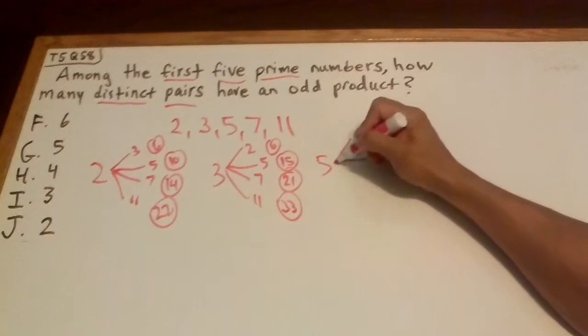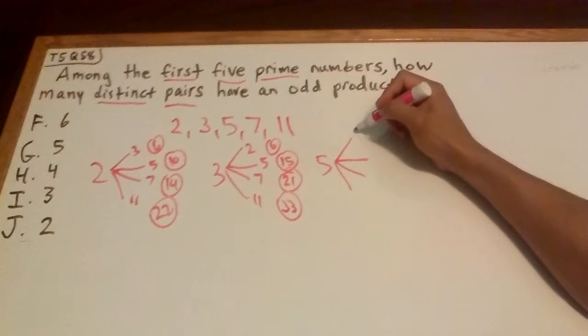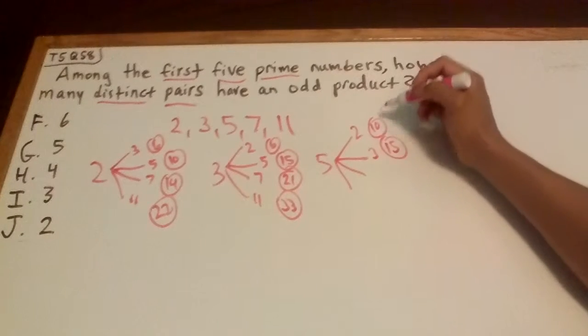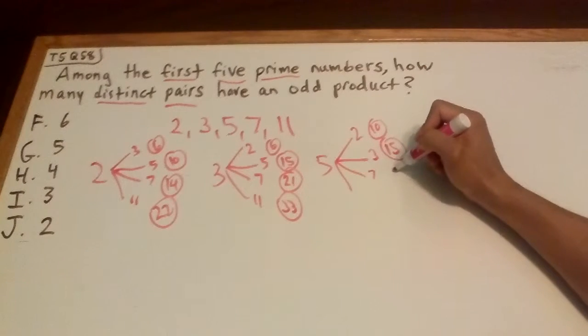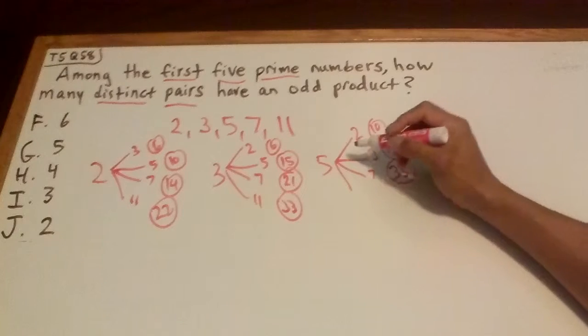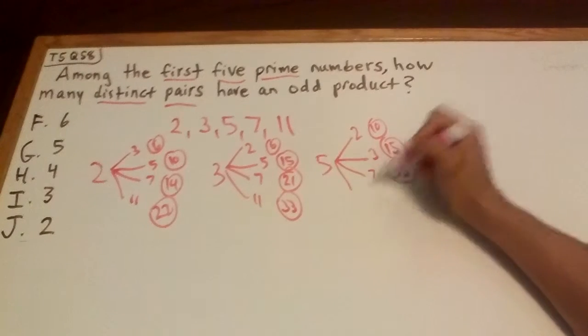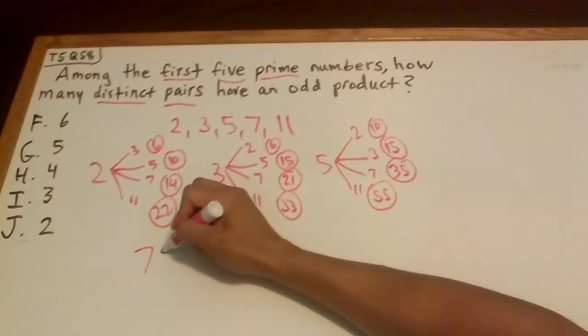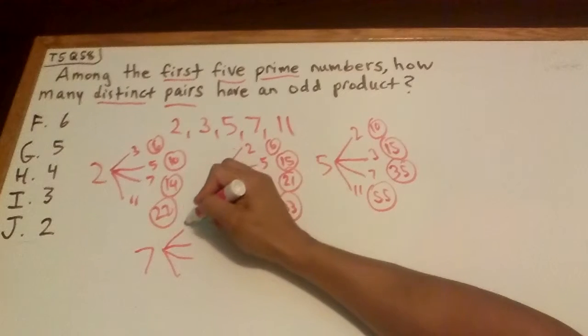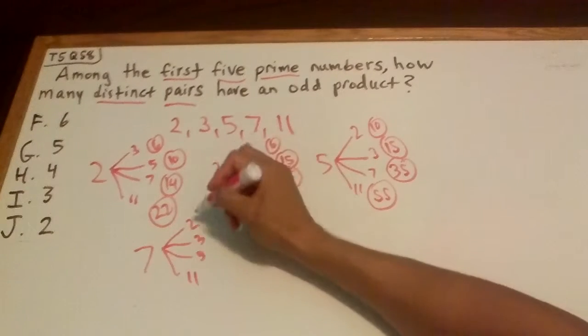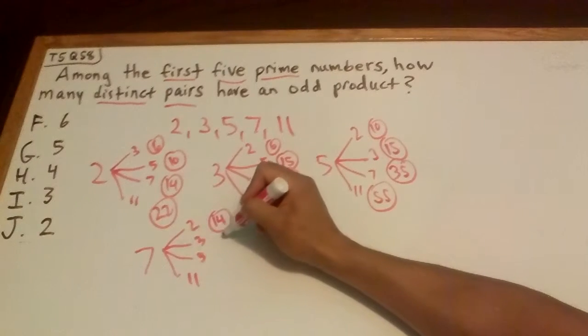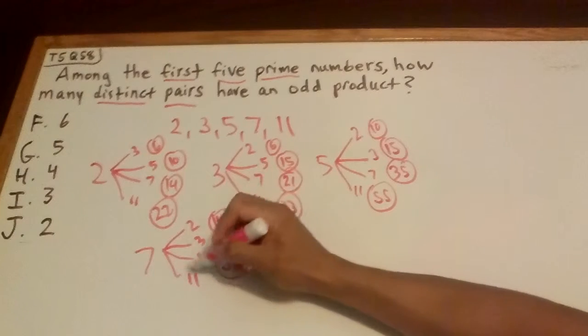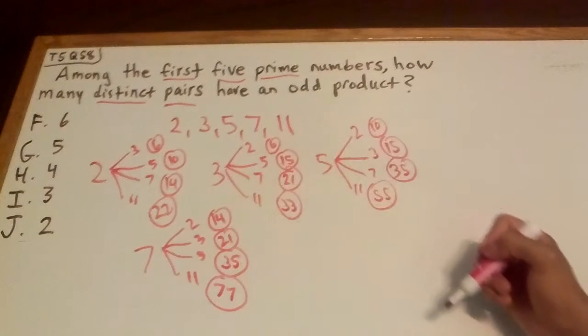Next one, 5. Again, make four branches. 5 times 2 is 10, 5 times 3 is 15, 5 times 7 is 35, and 5 times 11 is 55. And then go on to 7, and again four branches: 2, 3, 5, and 11. This time we have 14, 7 times 3 is 21, 7 times 5 is 35, and 7 times 11 is 77.